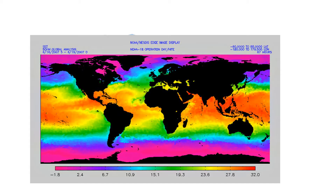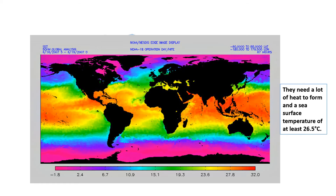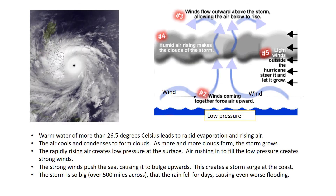For a tropical storm to form it needs warm ocean water of around 26.5 degrees Celsius or more. This chlorophyll map shows where the areas of warm water are, and you can see the Philippines here is in that band of water that gets direct sunlight and is therefore really warm.